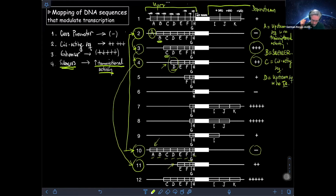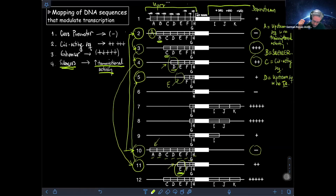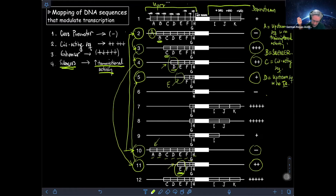Moving forward, we need to figure out E, F, G, and H. Comparing construct 11 with construct 5 — the only difference is the presence or absence of segment E. In construct 11 we have E, but in construct 5 we don't. We see that we go from two crosses of transcriptional activity to only one cross. The elimination of E reduces transcriptional activity, which implies that segment E is another cis-acting sequence.